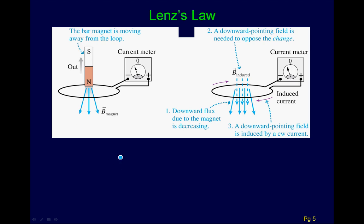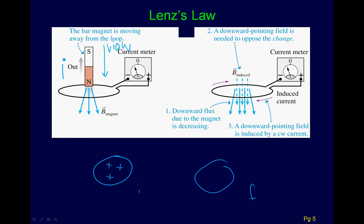Here's the example we talked about in class. I draw my initial and my final loops, taking the view where I'm staring downwards. I see three magnetic field lines pointing into the page. The bar is moving upwards, so there'll be fewer magnetic field lines pointing through. The induced B field wants to push downward — into the page — so my thumb goes into the page, and my fingers coil in a clockwise direction when looking down.